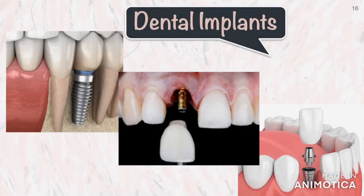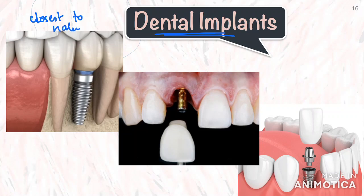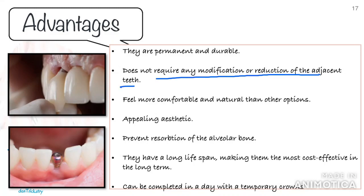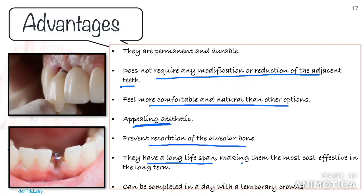The next option is dental implants. When it comes to replacing a single tooth, implants are considered the gold standard because they are the closest artificial substitute for a tooth. An implant is a titanium screw-like structure which is drilled into the bone through a minor surgical procedure. After it integrates or fuses with the surrounding bone, a crown is placed on the implant. The advantages include: they do not require any modification or reduction of adjacent teeth, they feel more comfortable and natural than other options, they provide great aesthetic results, they prevent resorption of the alveolar bone, they have a long lifespan making them cost-effective in the long term, they are permanent and durable, and in some cases they can be done in one day through an immediate implant placement procedure with an immediate temporary crown.